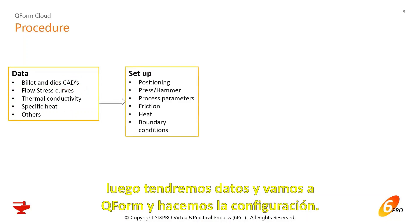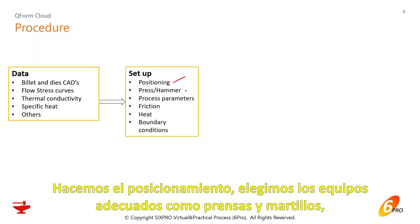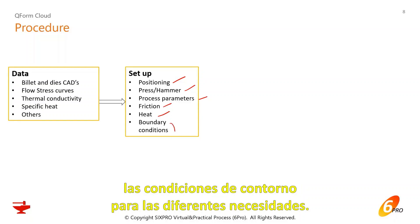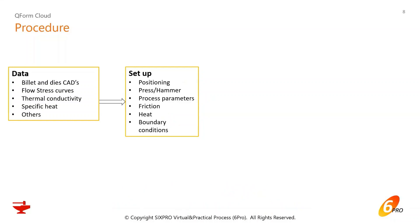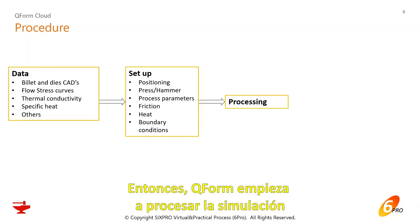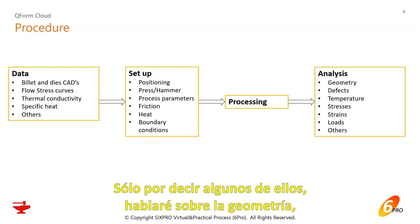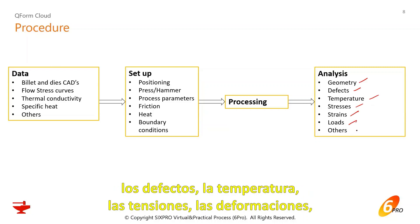When you have your data, you go to Keyform and do the setup. You do positioning, choose the right equipment such as presses and hammers, define process parameters — friction, heat, boundary conditions of different types. Then Keyform starts processing your simulation and you can finally analyze the results: geometry, defects, temperature, stresses, strains, loads, and many others.